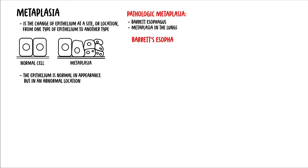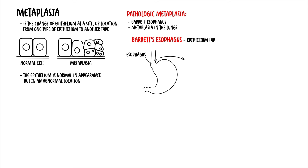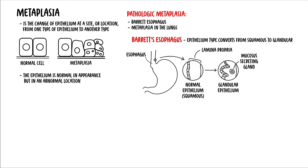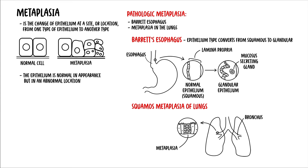Barrett's esophagus is due to reflux of gastric contents into the esophagus, which causes the epithelium type to convert from squamous to glandular. Squamous metaplasia in the lungs is due to exposure of respiratory epithelium to toxins and cigarette smoke.